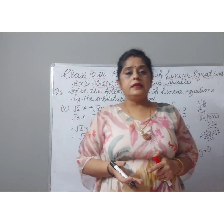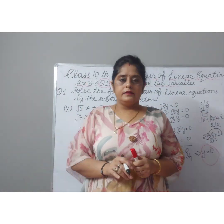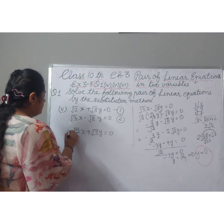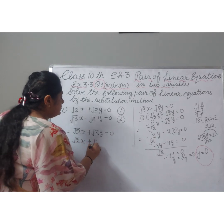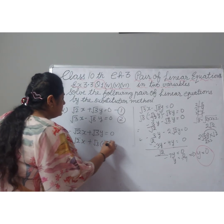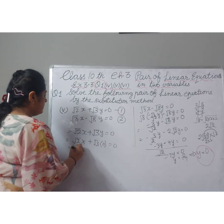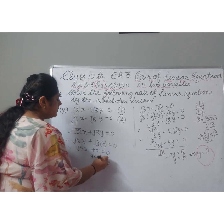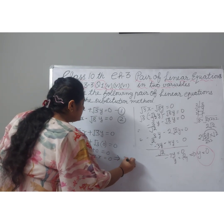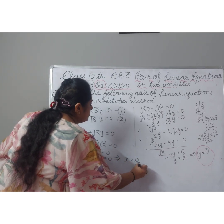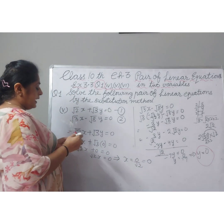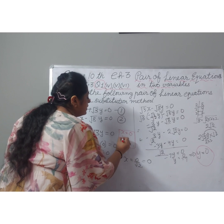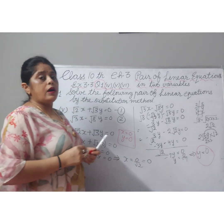Now we put y equal to 0 into equation 1: root 2x plus root 3 times 0 equals 0. Root 3 times 0 is 0, so root 2x plus 0 equals 0, which means root 2x equals 0, and therefore x equals 0 divided by root 2, giving x equal to 0. The answer is x equal to 0 and y equal to 0.